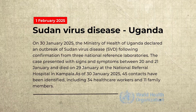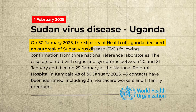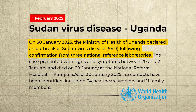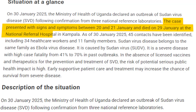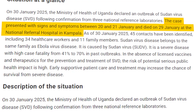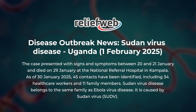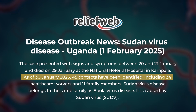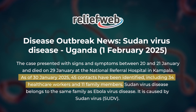On January 30, 2025, Uganda's Ministry of Health announced an outbreak of Sudan Ebola virus disease after confirming it through three national laboratories. The person showed symptoms between January 20 and 21 and passed away on January 29 at the National Referral Hospital in Kampala. By January 30, 45 people who had contact with the patient were identified, including 34 healthcare workers and 11 family members.